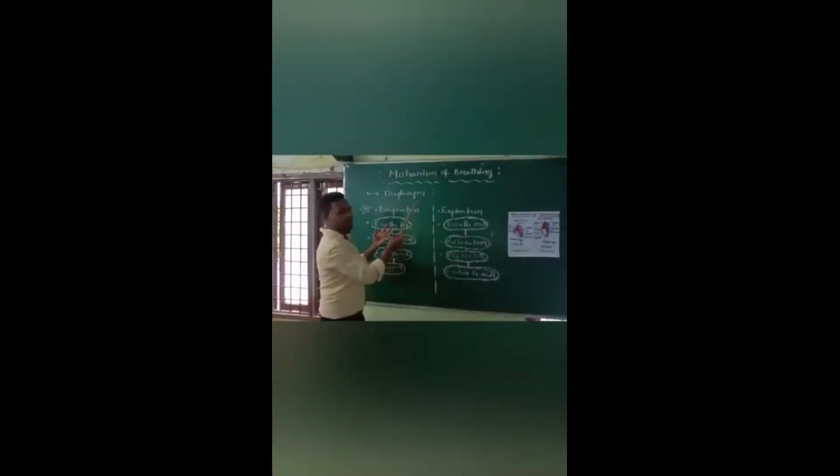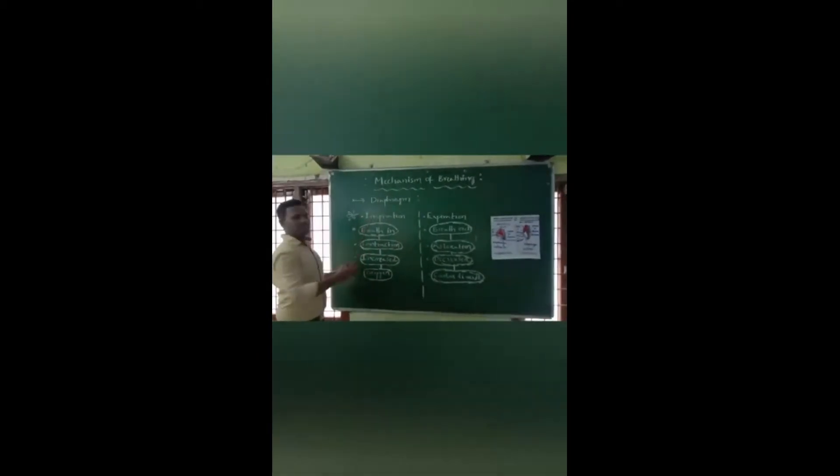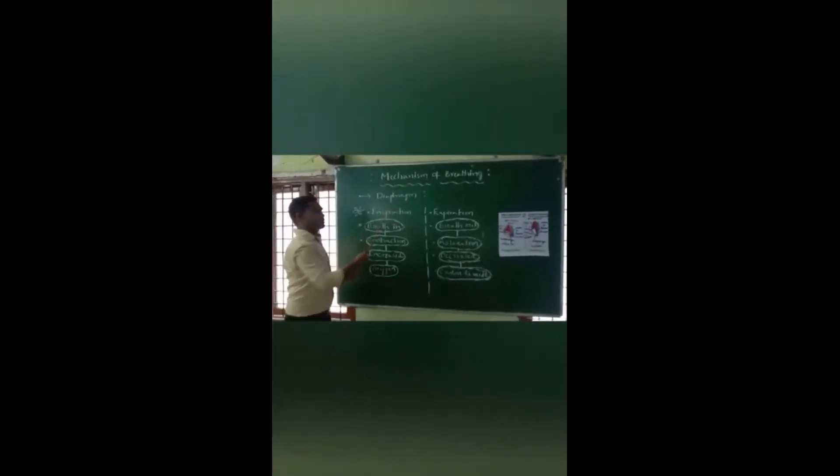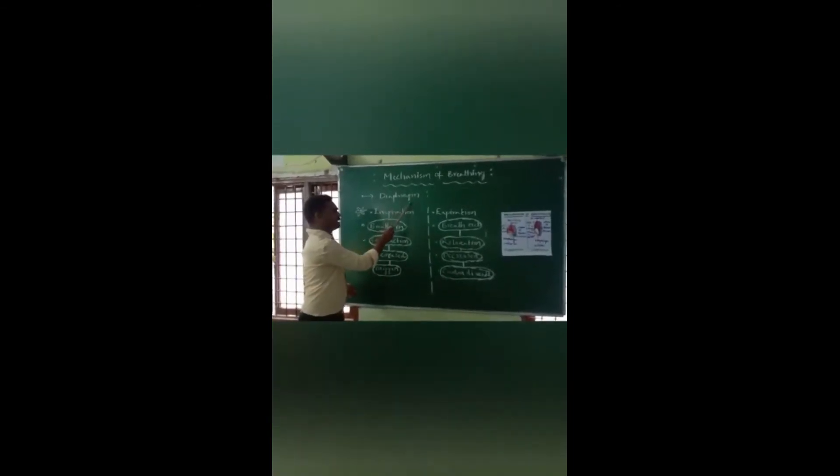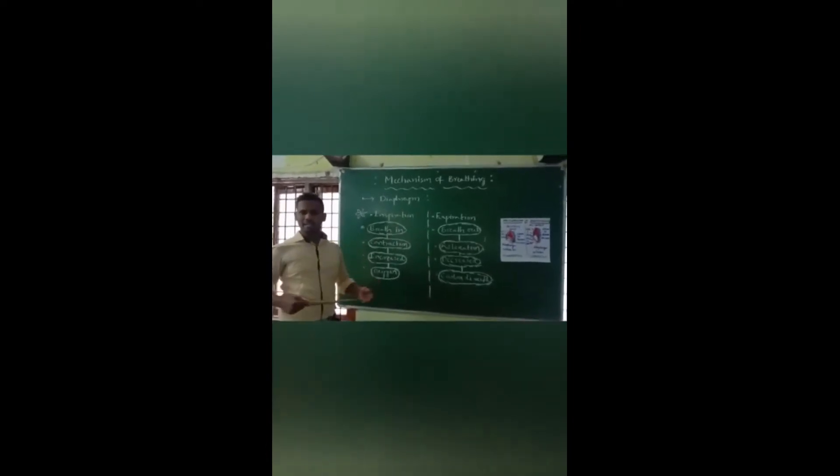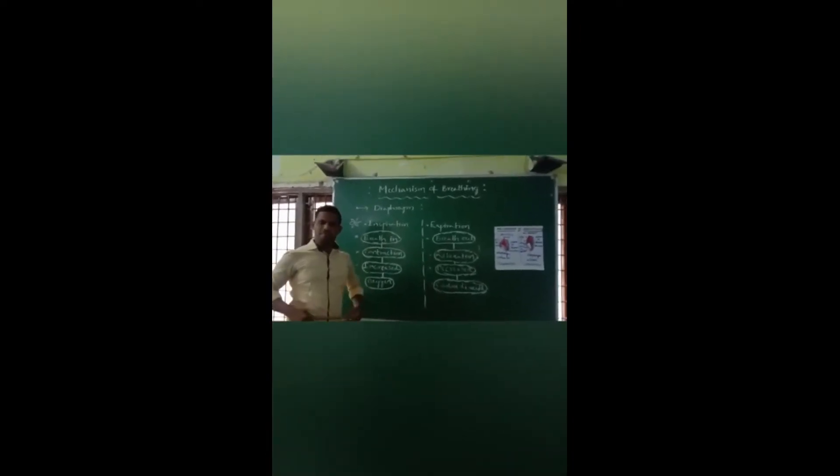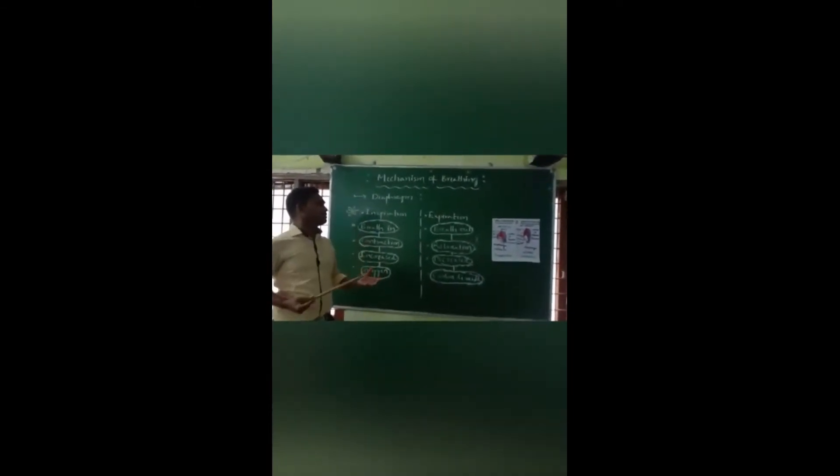Today we are going to discuss about mechanism of breathing. The structure is very important. The diagram is playing an important role in mechanism of breathing. Diaphragm, which is a horizontal muscular layer, is separating thoracic cavity from abdominal cavity. You see, diaphragm, how it's showing that mechanism.